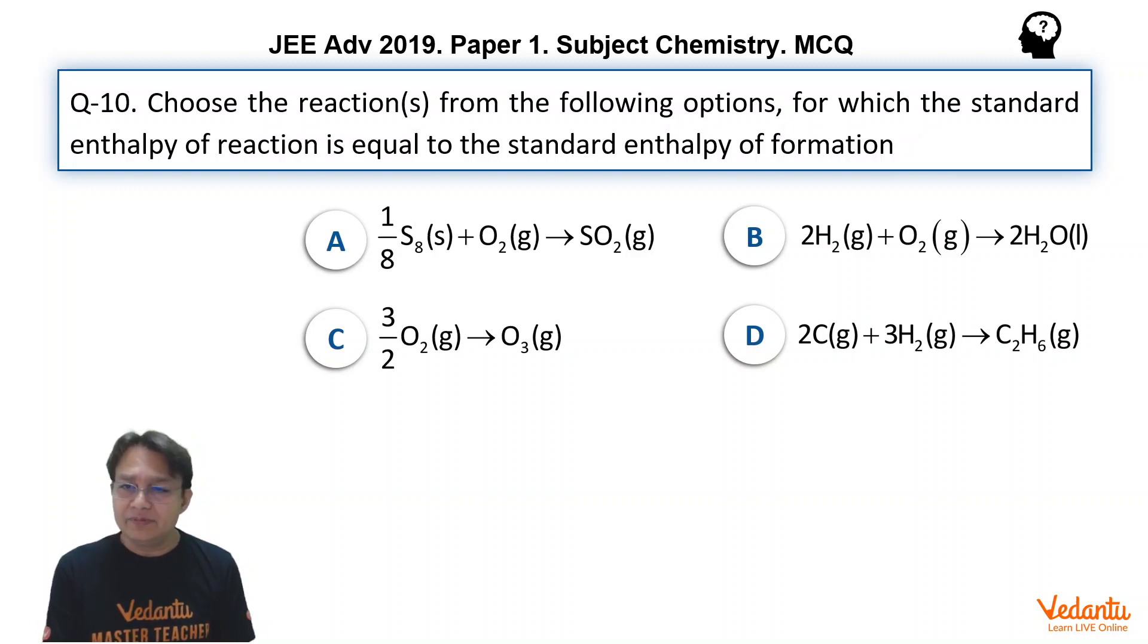If we look at the B option, it is not enthalpy of formation. Why? Because in this reaction, 2 moles of H2O liquid is formed. And if 2 moles of H2O liquid is formed, we can rule out its being the enthalpy of formation due to this.